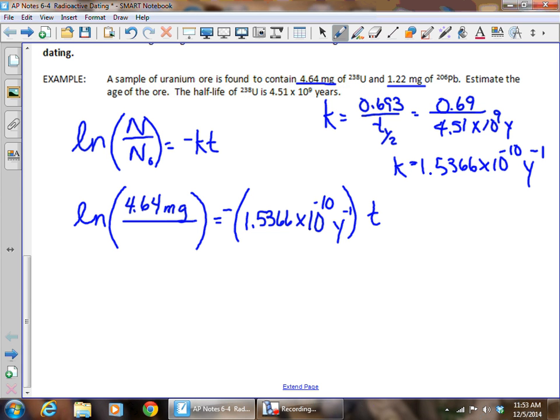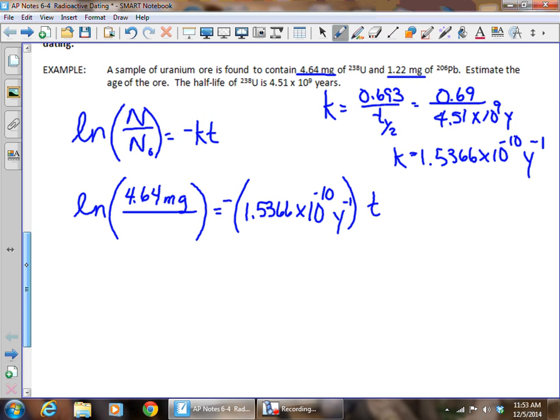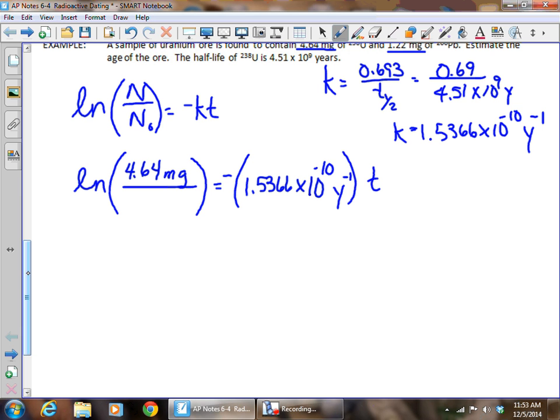So let's think about it. If we want to know what N0 is, we know that now it is 1.22 milligrams of lead, but keep in mind that the mass of lead, look at what the isotope is, it's lead-206. So when we have that 206, does it make sense that for every 206 grams of lead, there'd be 238 grams of uranium? Or for every 206 AMUs of lead, there'd be 238 AMUs of uranium.